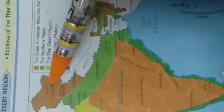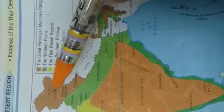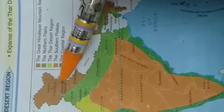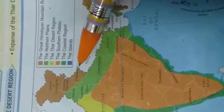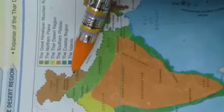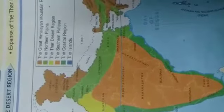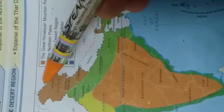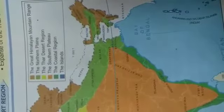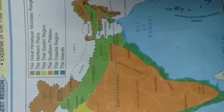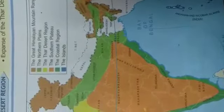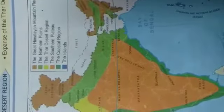First of all, the northern mountains. The northern mountains form the northern borders of India. These mountains run in a west to east direction from Jammu and Kashmir to Arunachal Pradesh, covering a distance of about 2500 km.